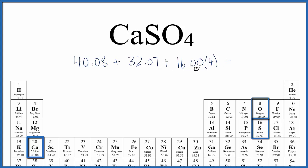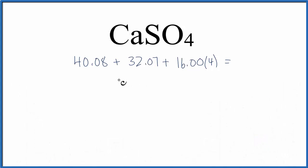So we have the 40.08 plus the 32.07, plus 4 times 16.00, that's 48, and we end up with a molar mass of 136.15 grams per mole for the molar mass of calcium sulfate, CaSO₄.